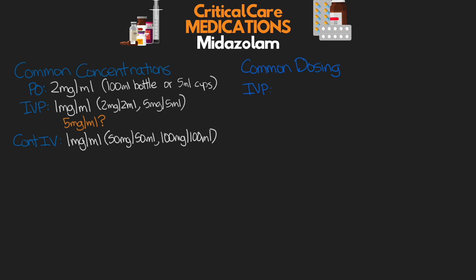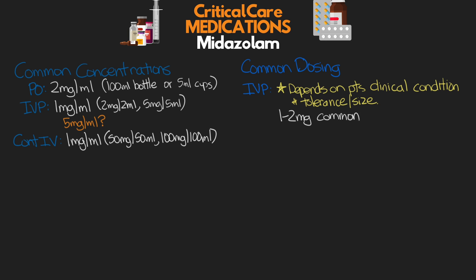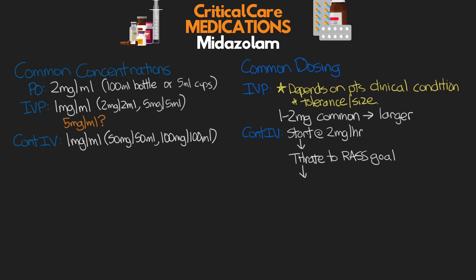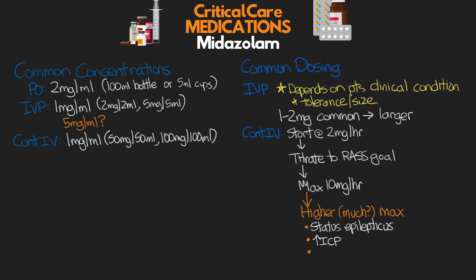For common dosing, focusing on the IV form: for IV push, the dose depends greatly on the patient's clinical condition, tolerance, and size, but 1 to 2 mg is pretty common, though larger doses can certainly be given. For IV infusion for sedation, we typically start around 2 mg/hour and titrate for RASS, with an ideal max of 10 mg/hour. That said, higher doses are seen in cases like status epilepticus, brain injury with elevated ICPs, proning, and paralytic therapy.